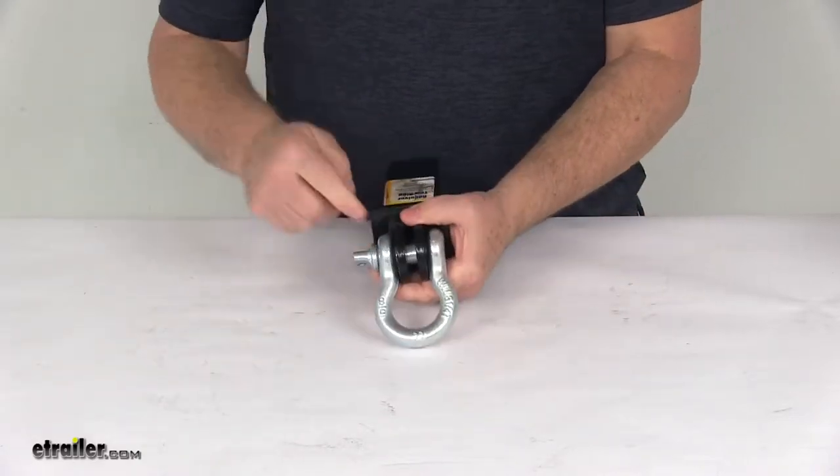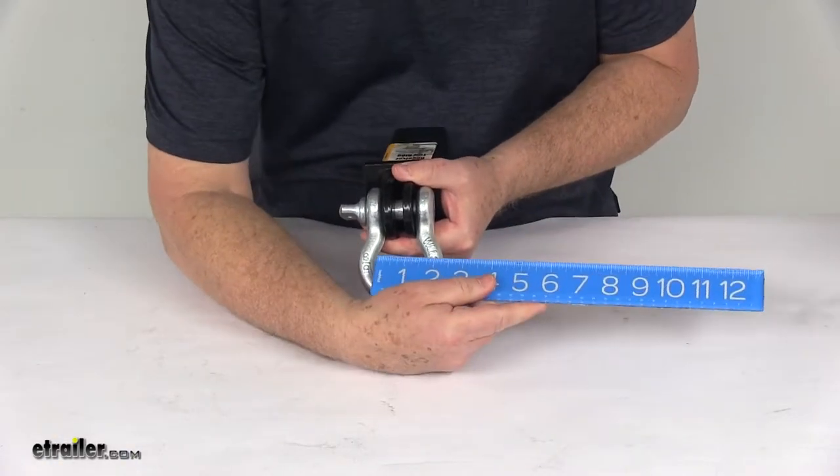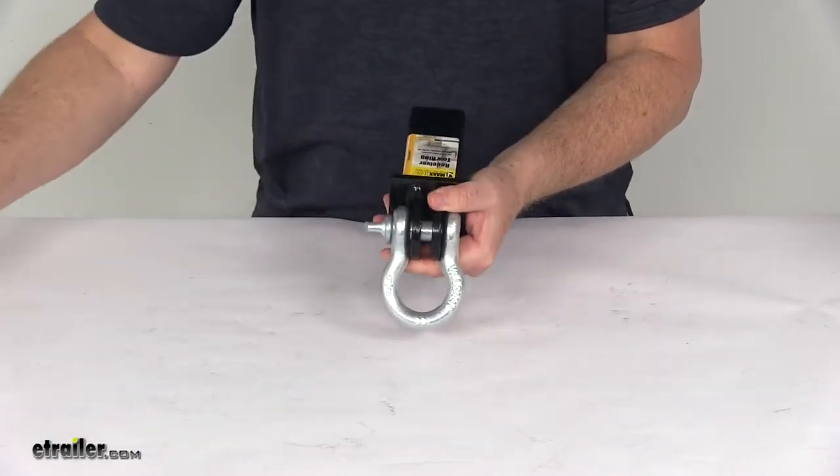The opening on the loop itself, the inner diameter, is going to be right at one and three-quarter inches.